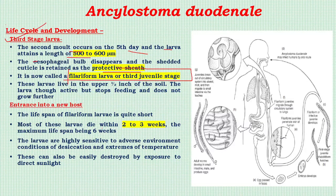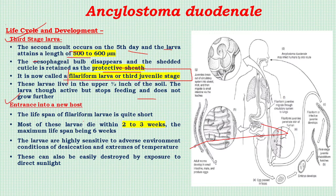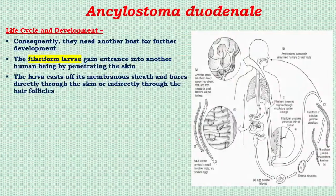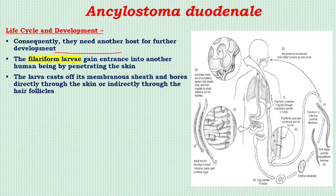Filariform larvae are found in the upper half-inch of the soil. They are very active but stop feeding and do not grow further. Their lifespan is quite short — most die within two to three weeks, with a maximum lifespan of six weeks. They are highly sensitive to desiccation, extreme temperatures, and direct sunlight. They require a new host for further development; filariform larvae gain entrance by penetrating the skin.